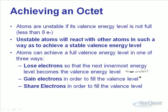Metals always lose electrons. Gaining and sharing are options for non-metals, depending on the situation. So the metals lose, and non-metals can either gain or share electrons in order to get a stable or full valence energy level.